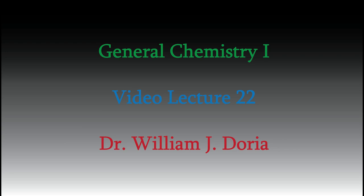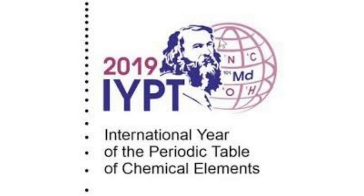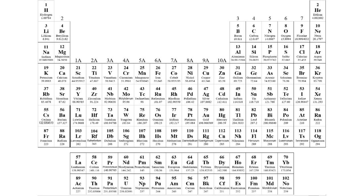Hi, and welcome again to my videos for General Chemistry 1. At the time I'm recording this video, it's the year of the 150th anniversary of the creation of the modern periodic table. Today I'd like to tell you about why the periodic table has its peculiar shape. It's not a rectangle, but its shape tells us a lot about the structure of the atom, and to understand it we'll need to use what we learned about orbitals in the previous video.